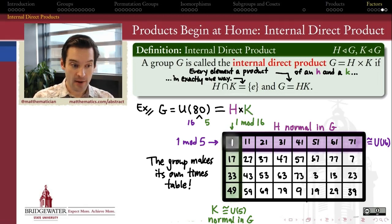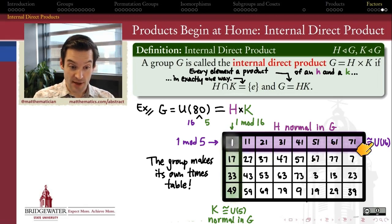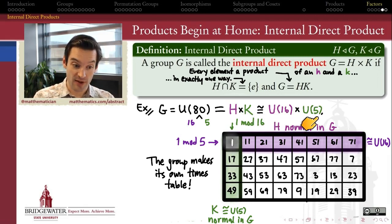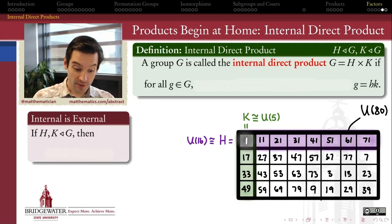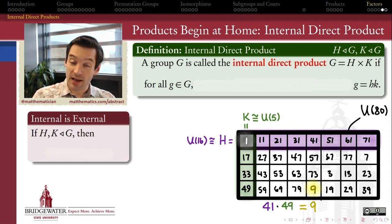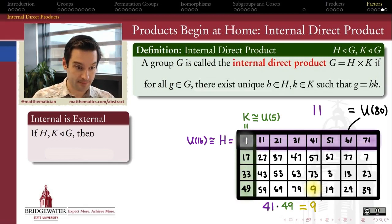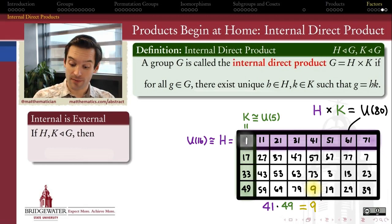In our example, U80 is the internal direct product of subgroup H and subgroup K, where H is isomorphic to U16 and K is isomorphic to U5. So U80 is isomorphic to the internal direct product of U16 with U5. This is valuable because every element of G can be written in a unique way as a product of an element from H and an element from K. This also shows why the internal direct product is not so different from the external direct product we already know about.